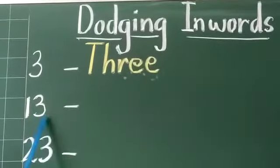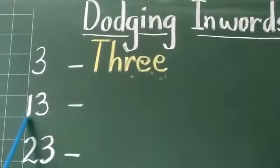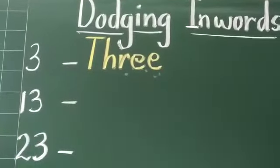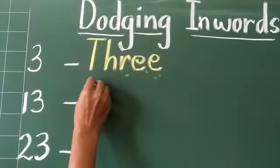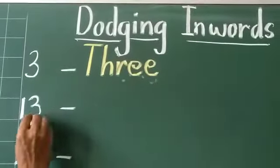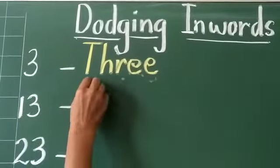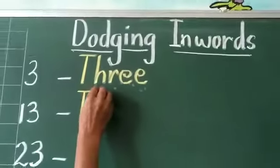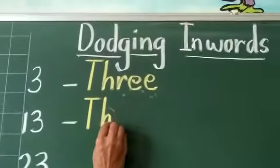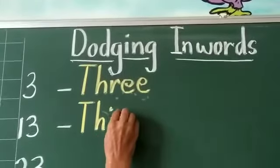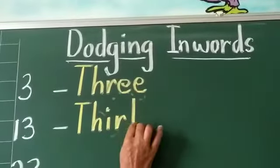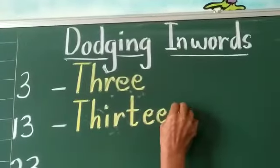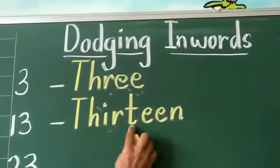Can you identify this number? Yes, very good. 1, 3 — 13. So you are going to write here the spelling of 13. You have to identify the numbers and then you are going to write the spelling. T, H, I, R, T, E, E, N — 13.